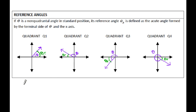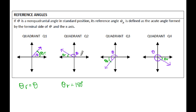If you are in the first quadrant, your reference angle just so happens to be your original angle, because both of them are acute. If you are in the second quadrant and trying to figure out the measure of this little wedge, you take 180 degrees and subtract your original angle theta. In radians, since 180 degrees is equivalent to pi, it would be pi minus the original angle theta.